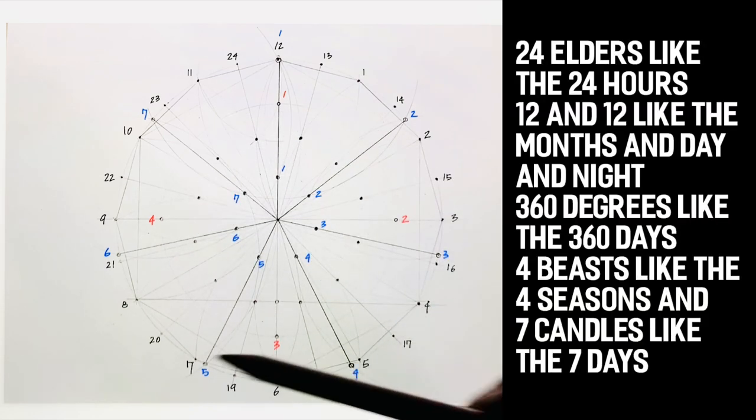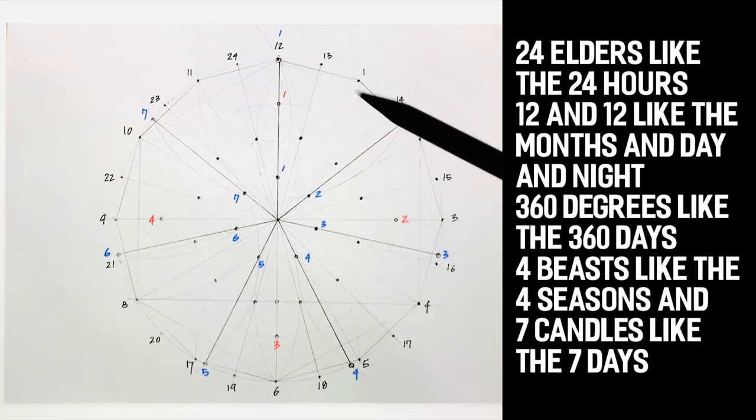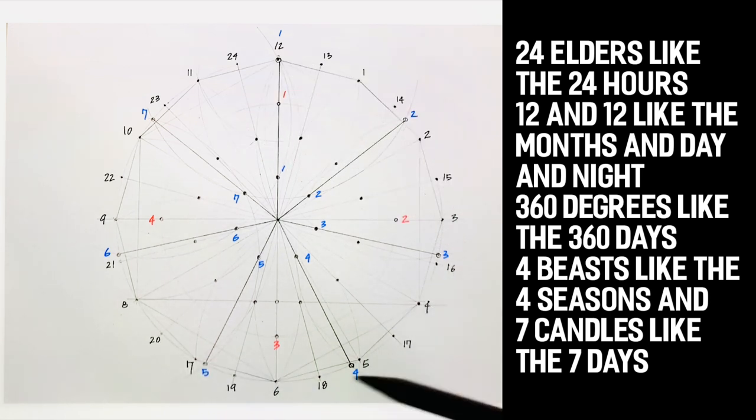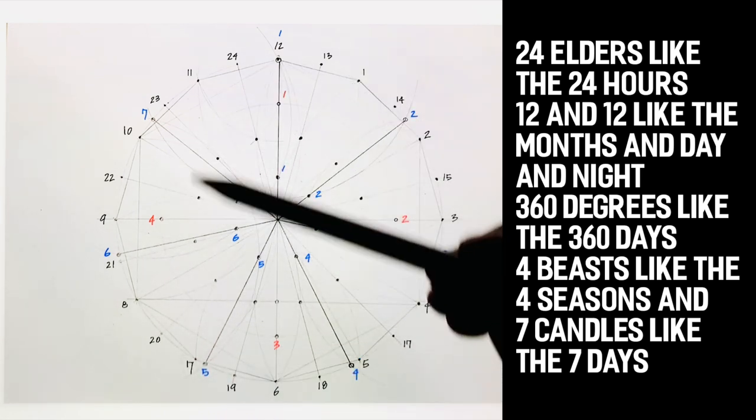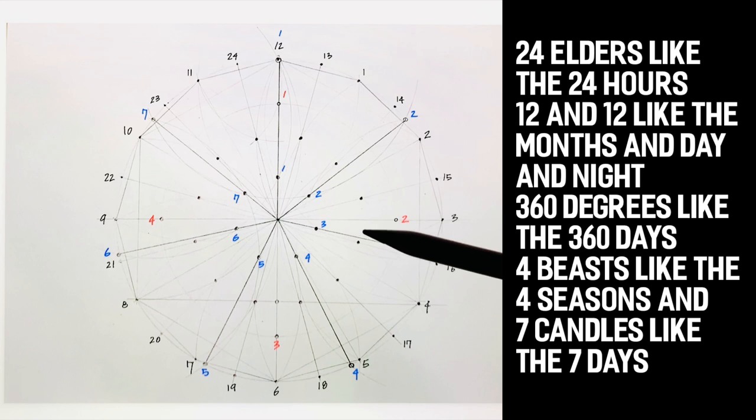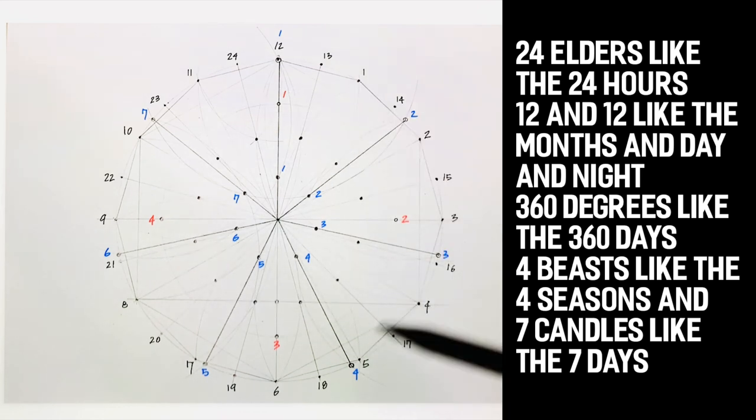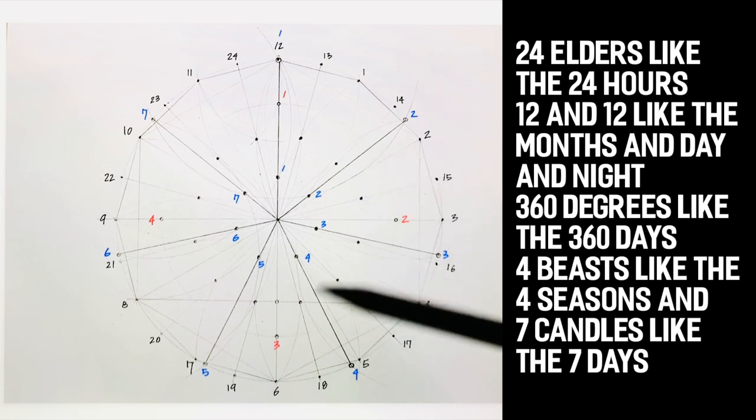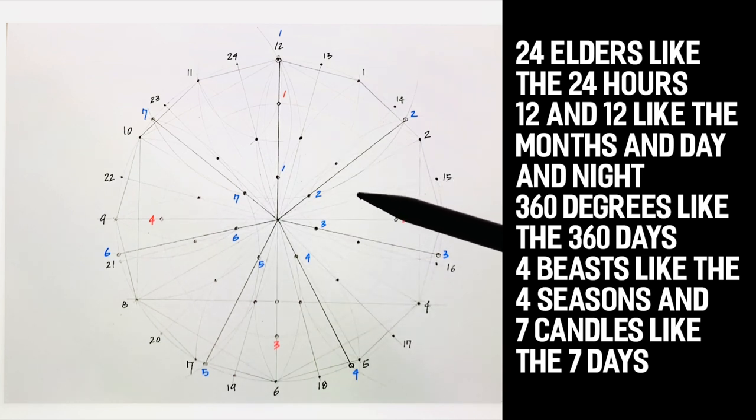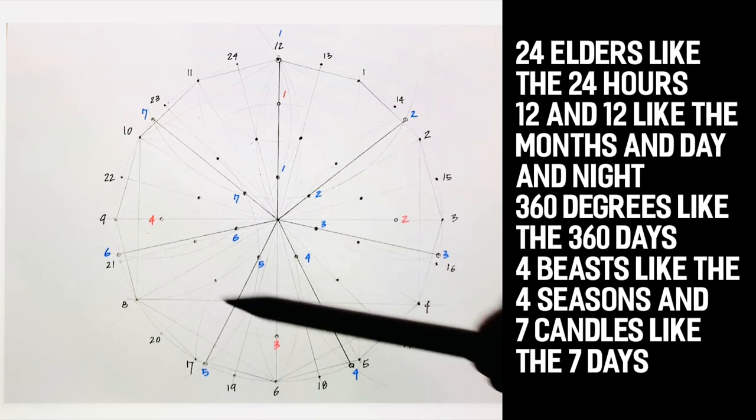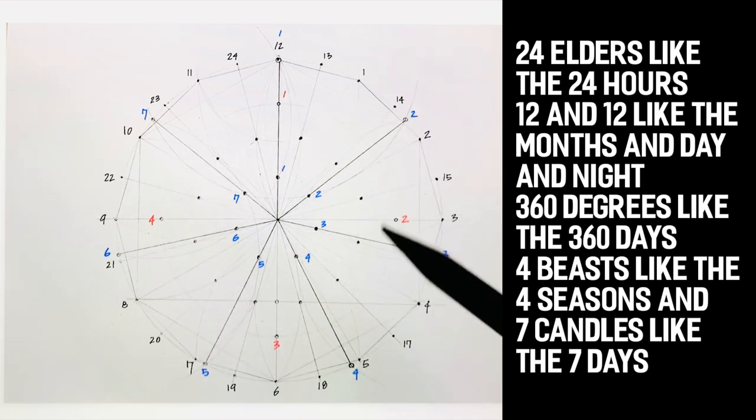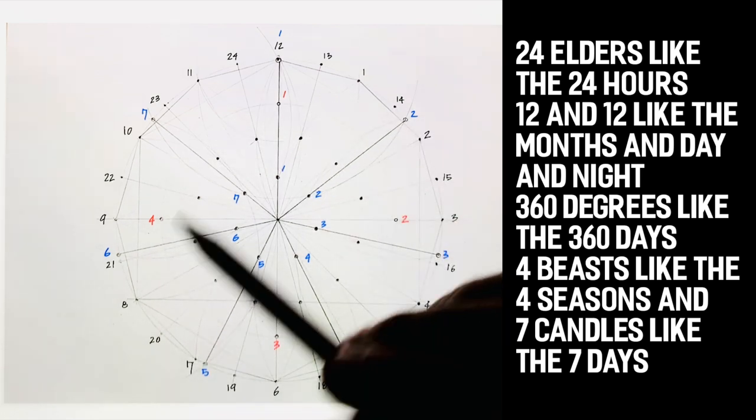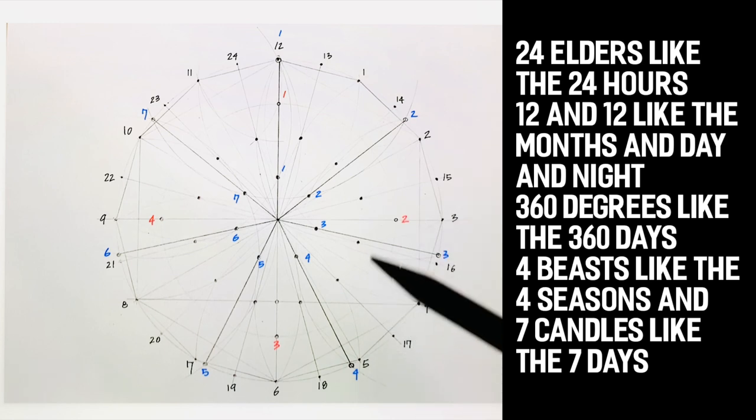Also representing the four seasons. Just like the main 12 points represent the 12 months, and 24 obviously represents the 24 hours in the day. The circle is 360, which means 360 days, not 365 as in the Gregorian. You understand that this is a calendar represented by the throne room. Why is that important?